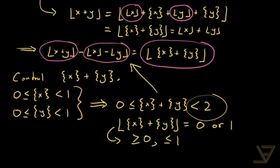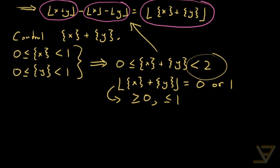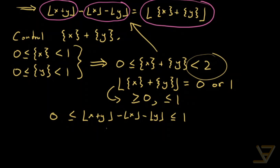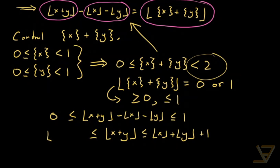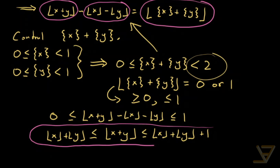Plugging that back in, we get bounds which say that the floor of x plus y minus the floor of x minus the floor of y is greater than or equal to zero and less than or equal to one. In alternative form: floor(x+y) is greater than or equal to floor(x) plus floor(y), and less than or equal to floor(x) plus floor(y) plus one. That proves the bounds in the floor case.